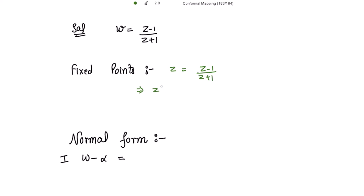we get z squared plus z equal to z minus 1. So this z will cancel and we get z squared plus 1 equal to 0, which implies z equal to plus or minus iota. So the fixed points are plus iota and minus iota.